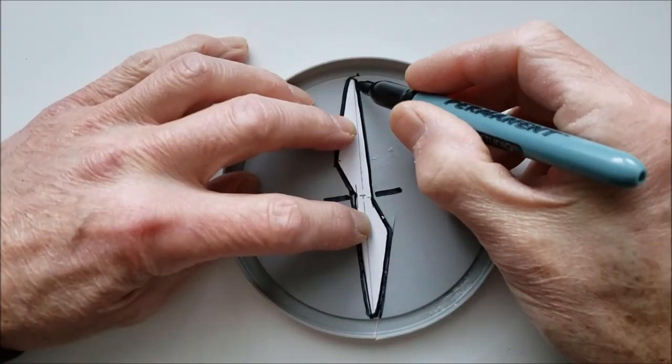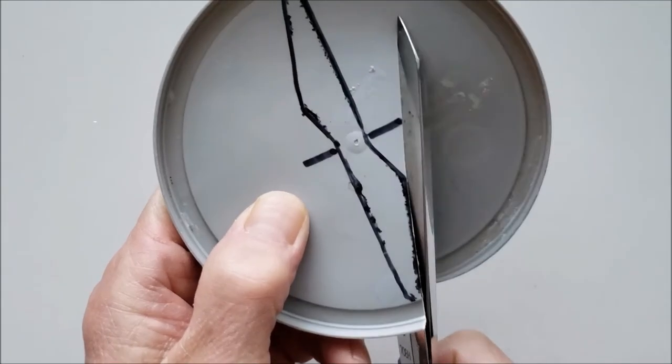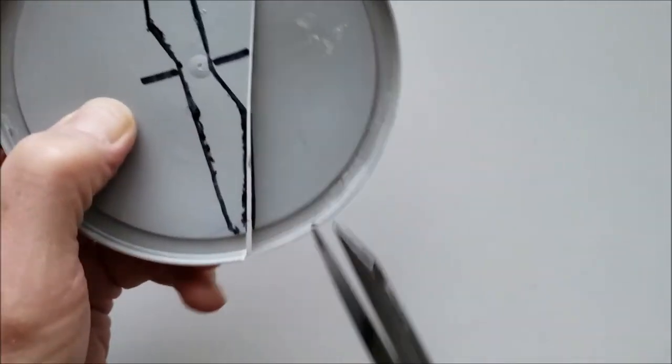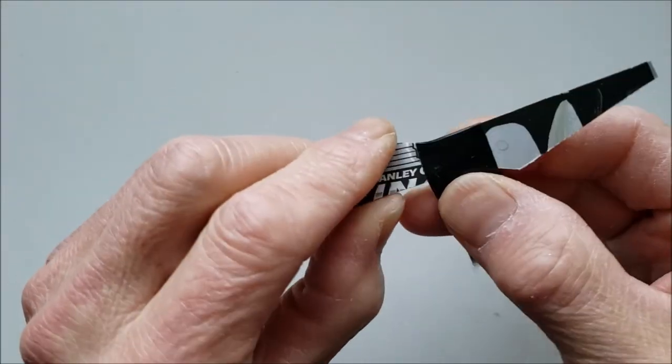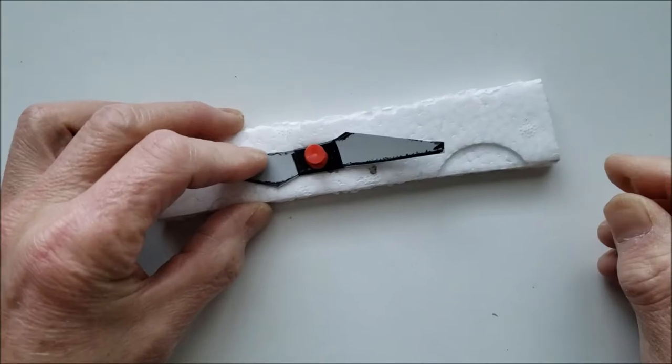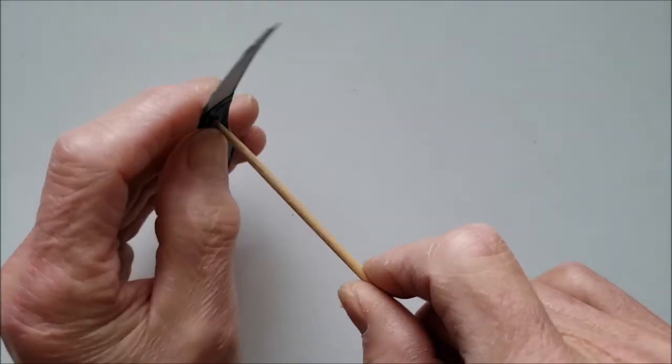To make the propeller, draw a cardboard template, copy it onto a piece of thick plastic, then cut it out. Reinforce the center with electrical tape. Punch a hole for the shaft with a thumbtack, then enlarge it using a skewer stick.